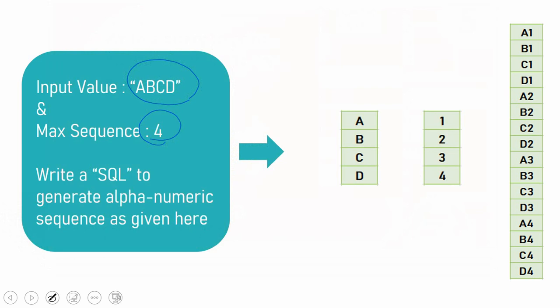Now that we have two datasets — one is a row of characters and another is a row of numbers — we just need to do a cross join between these two things so that it will return 16 rows, and then concatenate the output from both: the row of characters and the row of numbers.